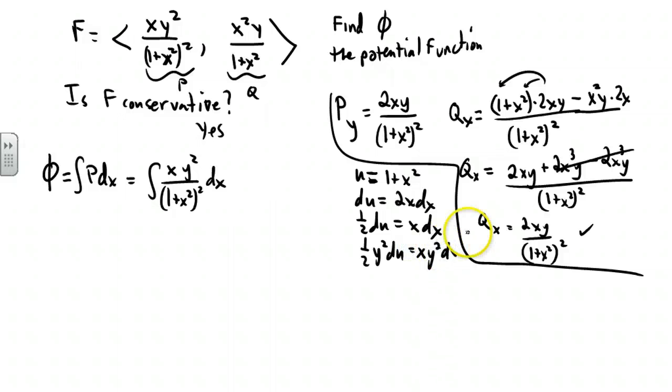So that numerator, xy squared dx, is going to be replaced by 1/2 of y squared du. We're integrating that whole thing over u squared, pull out the constant, and call that u to the negative 2.